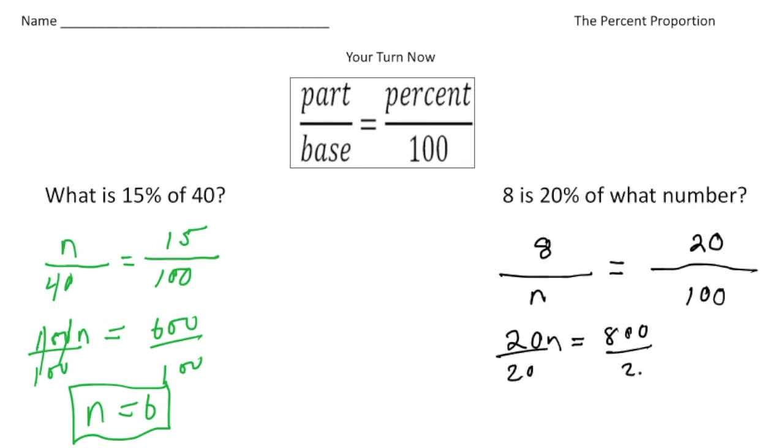And that's going to equal 8 times 100, which is 800. Now I'm going to divide both sides by 20 to solve for n. 800 divided by 20—I'm going to cross off one zero from each, so now it's 80 divided by 2, which is 40. And there's your answer. How'd you do?